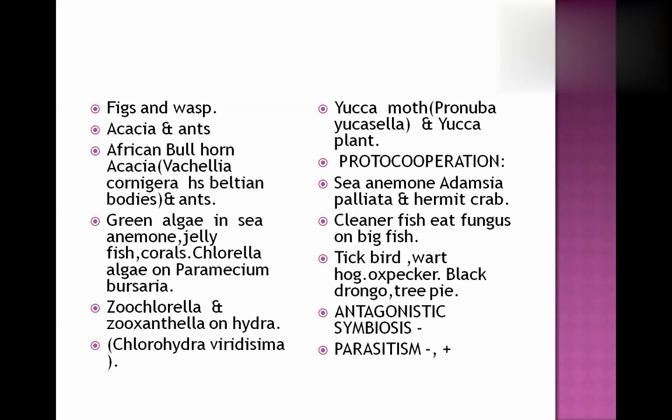Tick bird, warthog, oxpecker, black drongo, treepie — they eat ticks from the animals on which they live and the animals get rid of ticks. Antagonistic type of symbiosis: one animal is harmed and another is neutral or gets benefit.